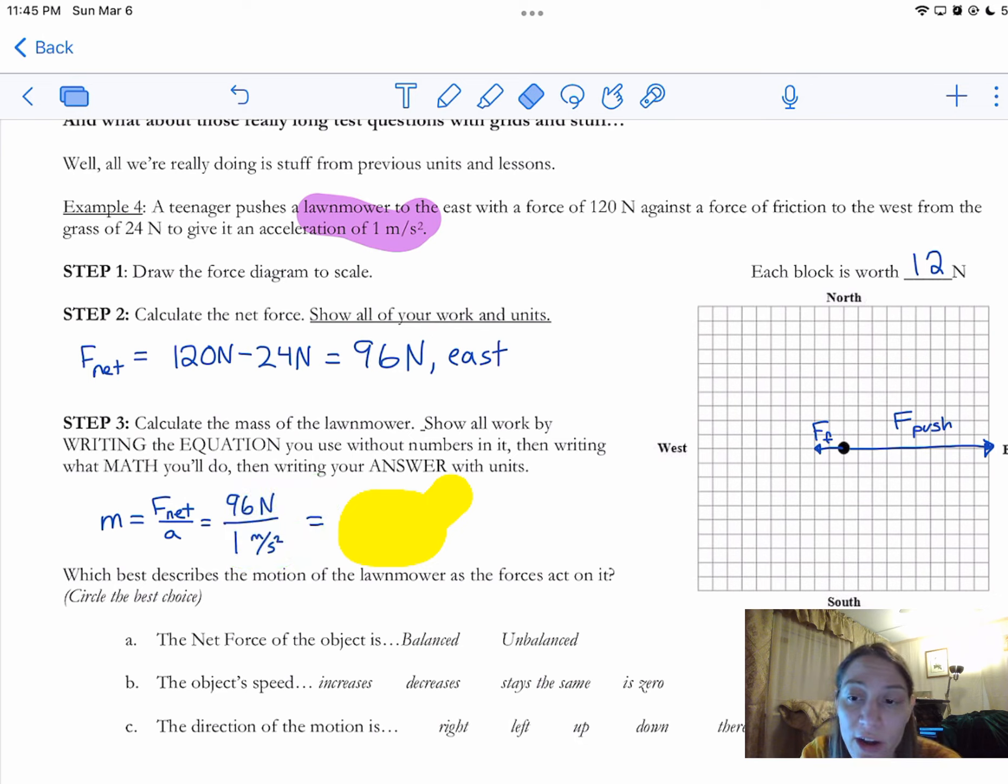Now remember, when you plug that into your calculator, the square doesn't go in there. That's part of the unit. It's not part of the number. So it's just 96 divided by 1, which I can do in my head. And the newtons divided by meters per second squared is a kilogram. So 96 kilograms for mass. So there's my answer there.